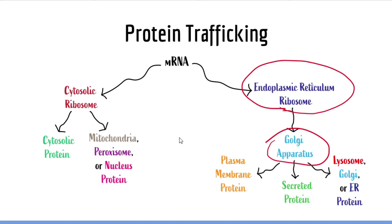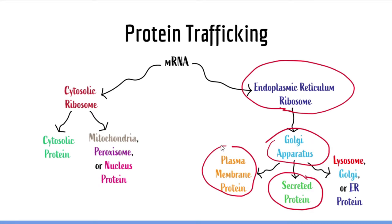Once in the Golgi, proteins have several options. They can go to the plasma membrane and become a plasma membrane protein. They can go to the plasma membrane and be excreted through a process called exocytosis. They can go to the lysosome. They can stay in the Golgi. Or they can go back to the endoplasmic reticulum. Vesicle-mediated trafficking — generally proteins made in the endoplasmic reticulum — can only be sent to one of these five destinations.